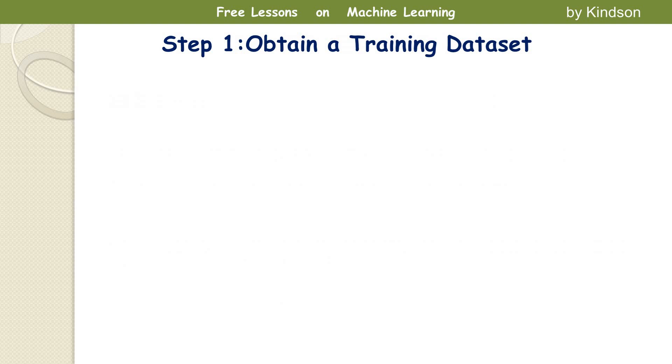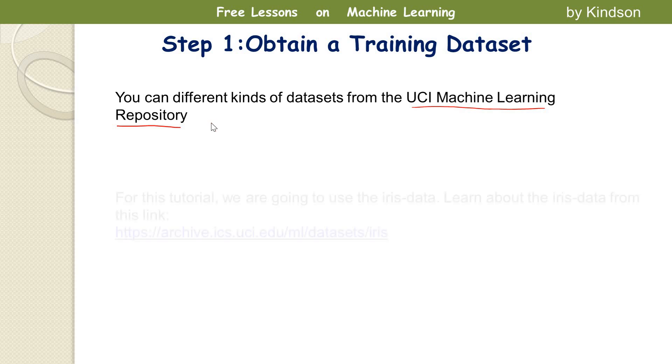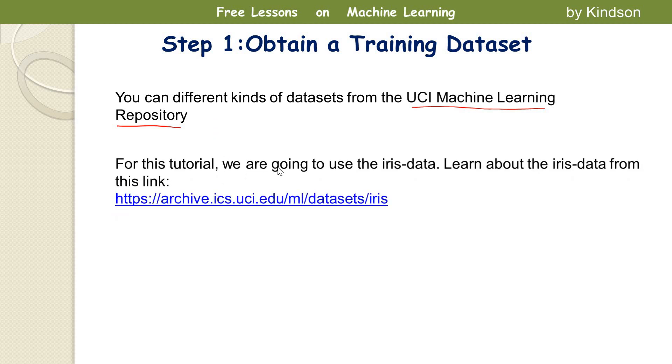Step one, take note of the steps. Step one: obtain your dataset. And there is a place you can get datasets. This place is called UCI machine learning repository. So UCI machine learning repository is free, a whole lot of datasets for several types of dataset that you can use.